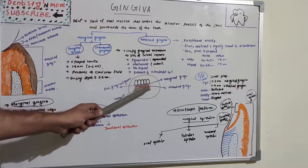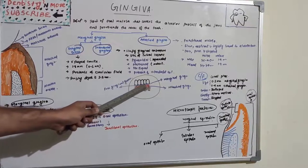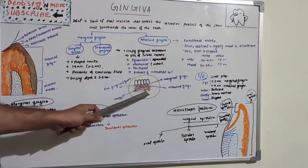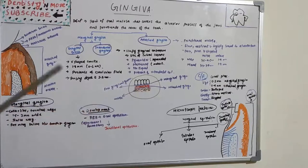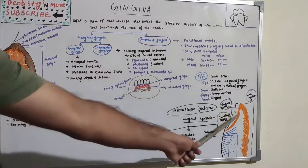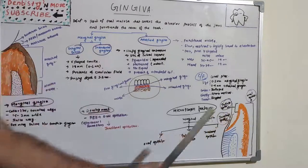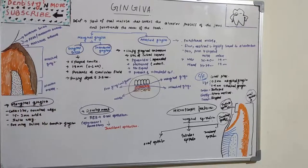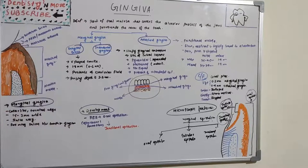The marginal gingiva is shown in blue and the attached gingiva in red, which is attached to the bone, and the alveolar mucosa is also visible. Marginal gingiva has two parts: the gingival sulcus and interdental gingiva. The gingival sulcus is a V-shaped crevice with a basic depth of 1.8 mm, ranging from 0 to 6 mm, which contains crevicular fluid or GCF. The probing depth is usually 2 to 3 mm.